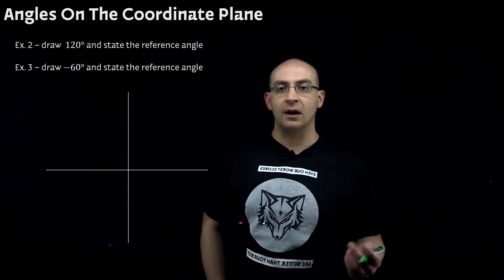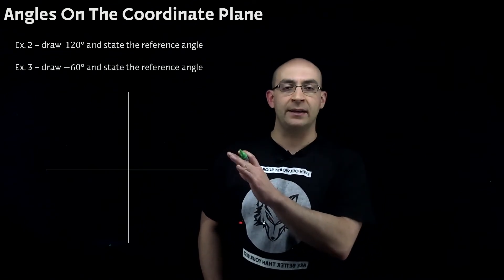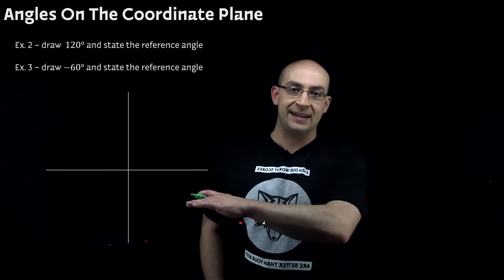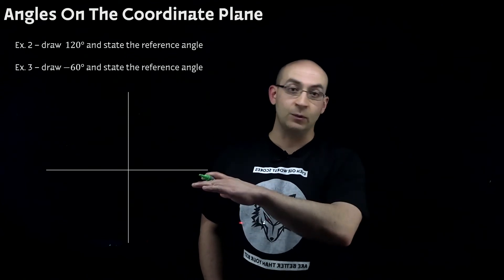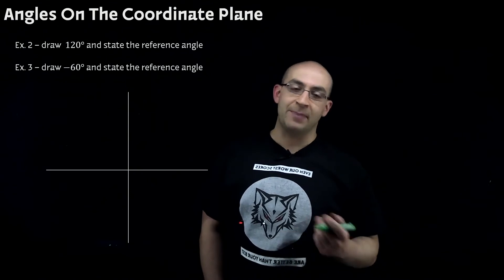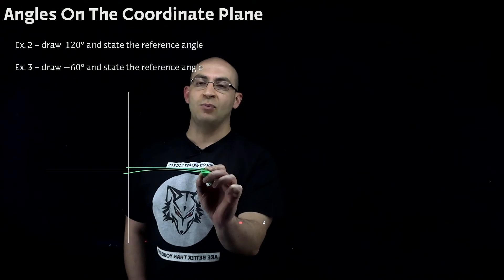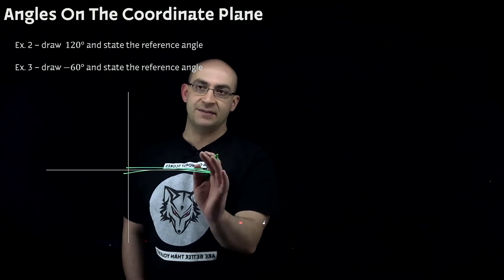Now, remember, reference angles are the difference between wherever that angle ends up, meaning its terminal point, and the closest way to get to the x-axis or the leftover part that we haven't accounted for yet. So, 120 degrees is going to be a positive angle. So, again, I'm going to start my initial value or my initial angle point at the x-axis and the positive side.